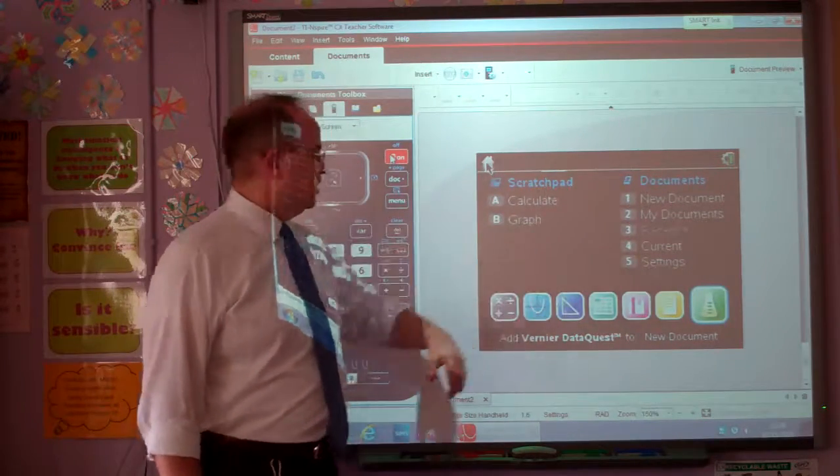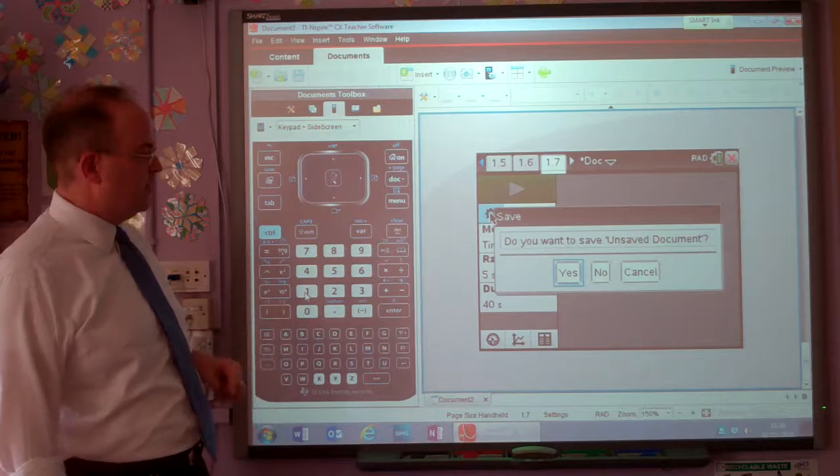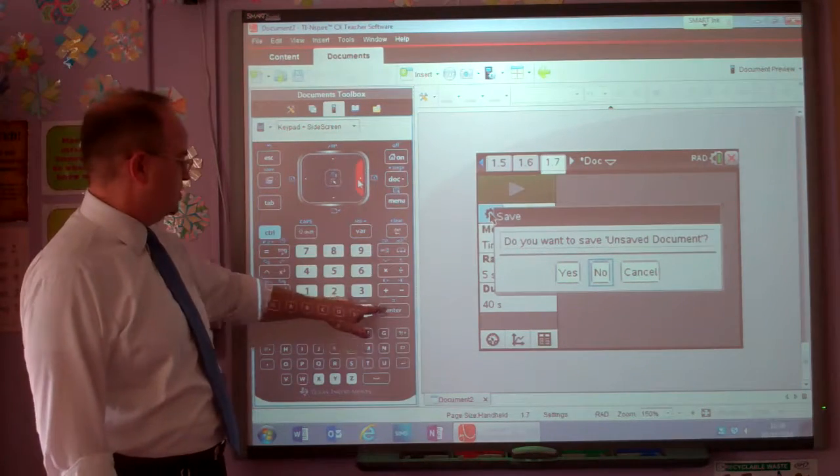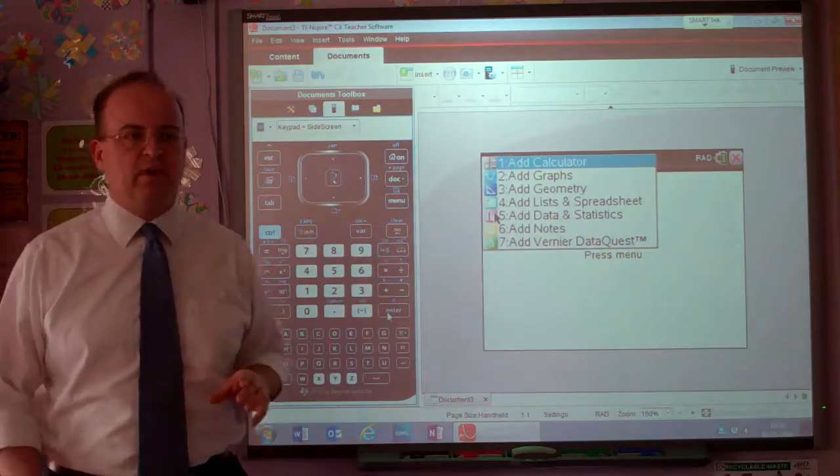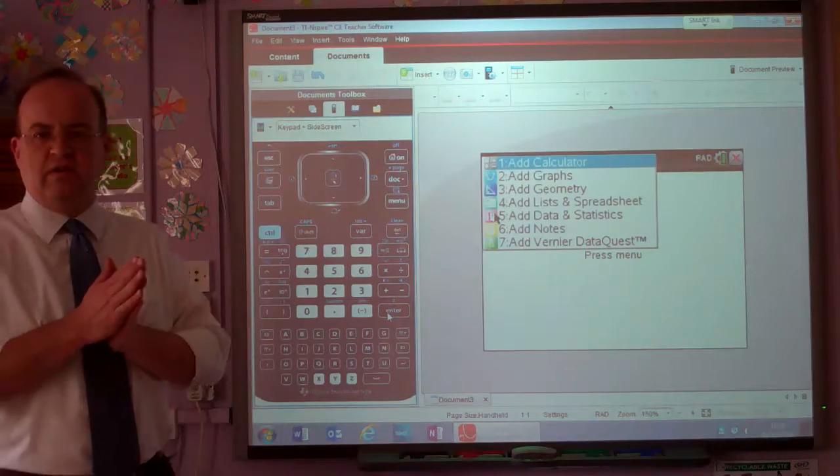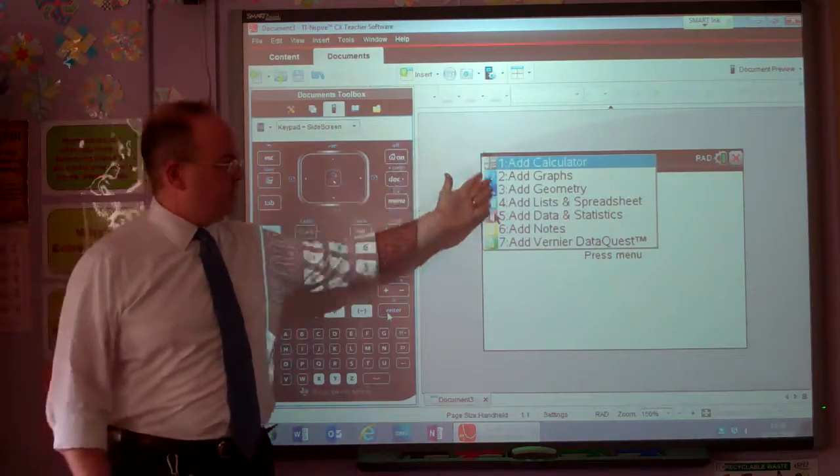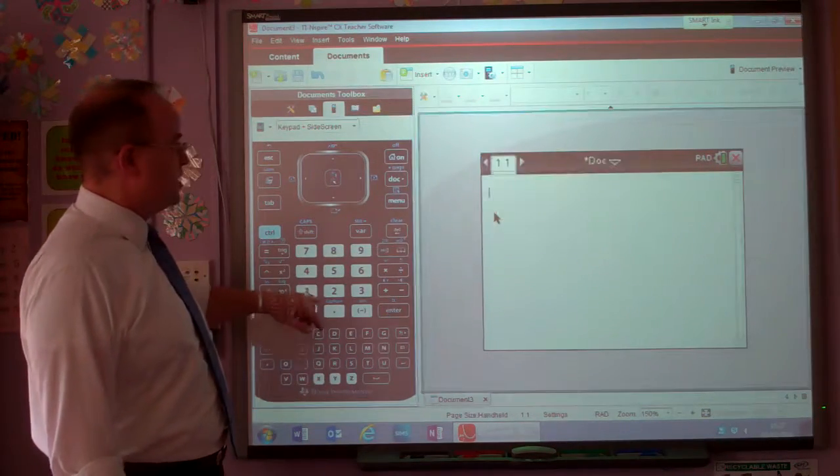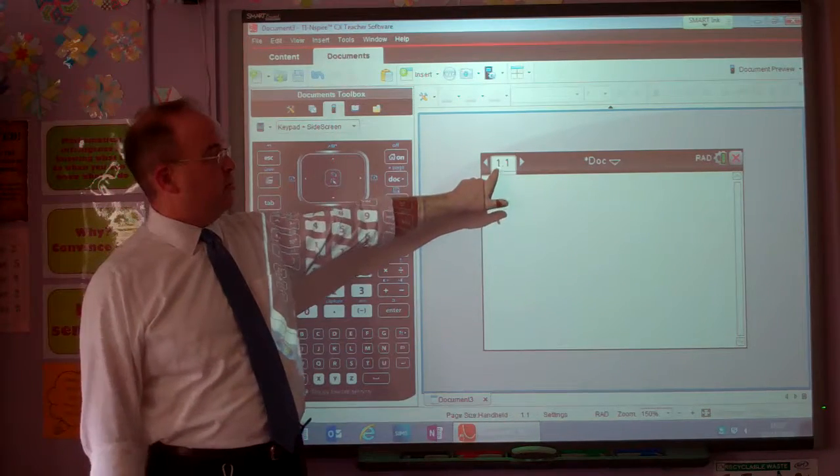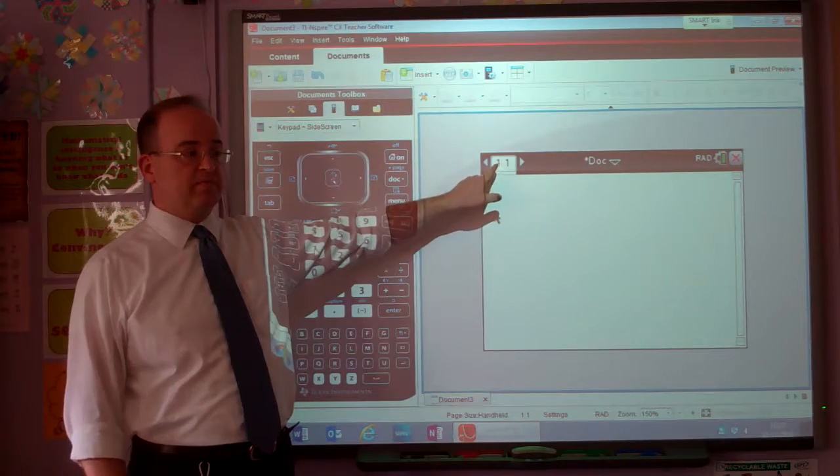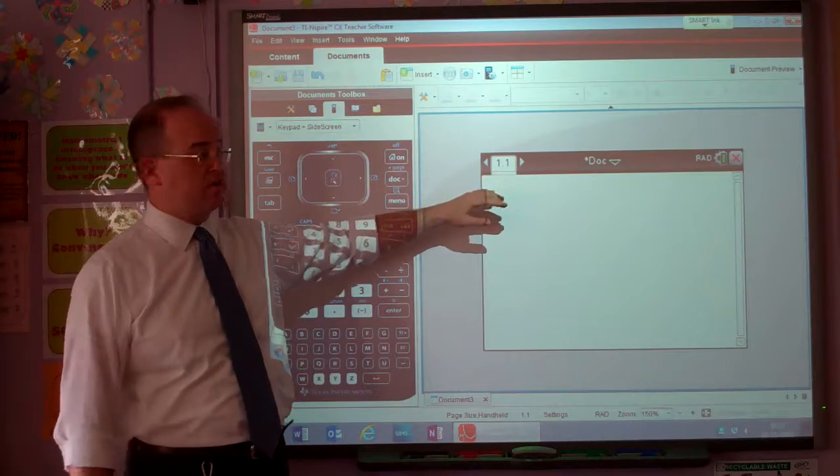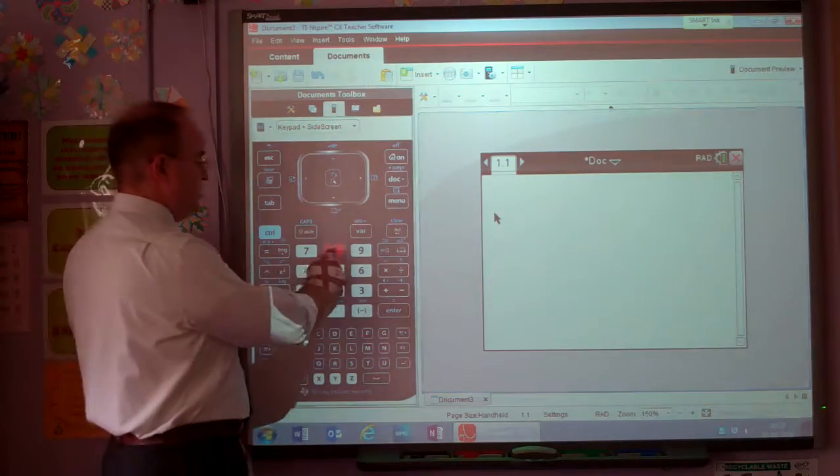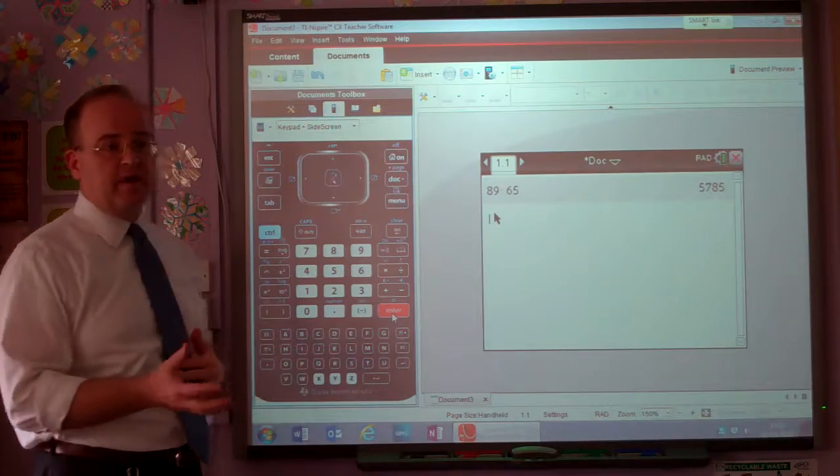If we want to create a new document, we're going to press 1 and we'll do this together. Do I want to save an unsaved document? I'm not going to save that. So have we all done this? Create a new document and then it offers us the pages that we want. So let's have a calculator page. At the top now we've got 1.1. This is now page 1.1, calculator page. So let's do 89.1 by 65.